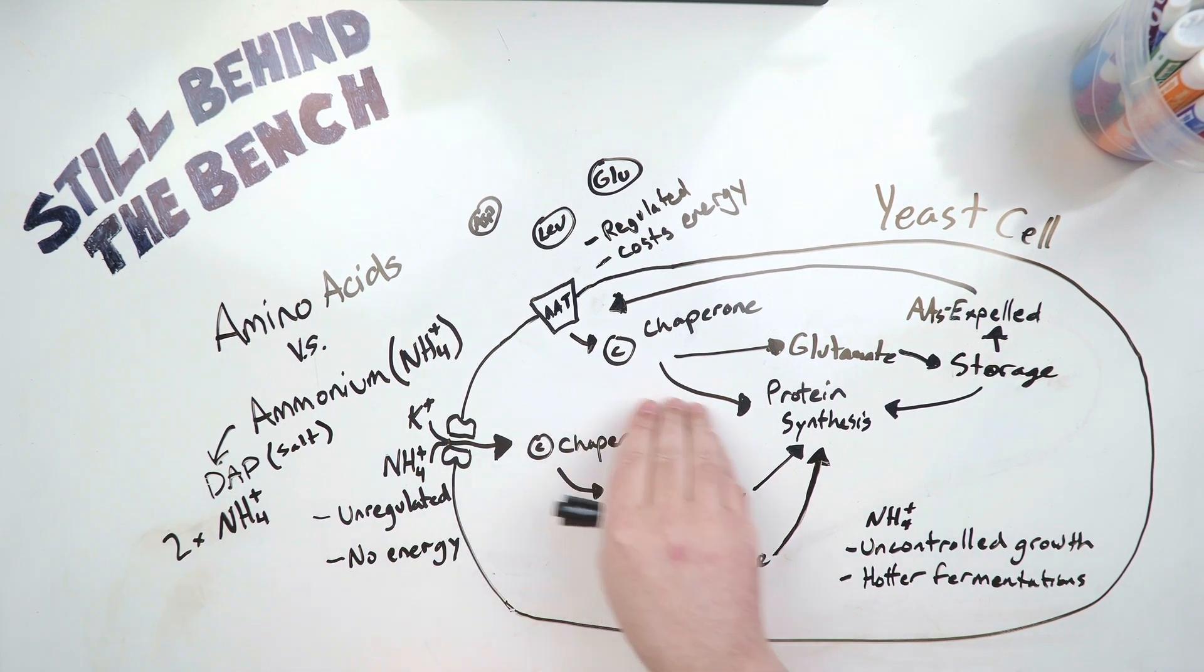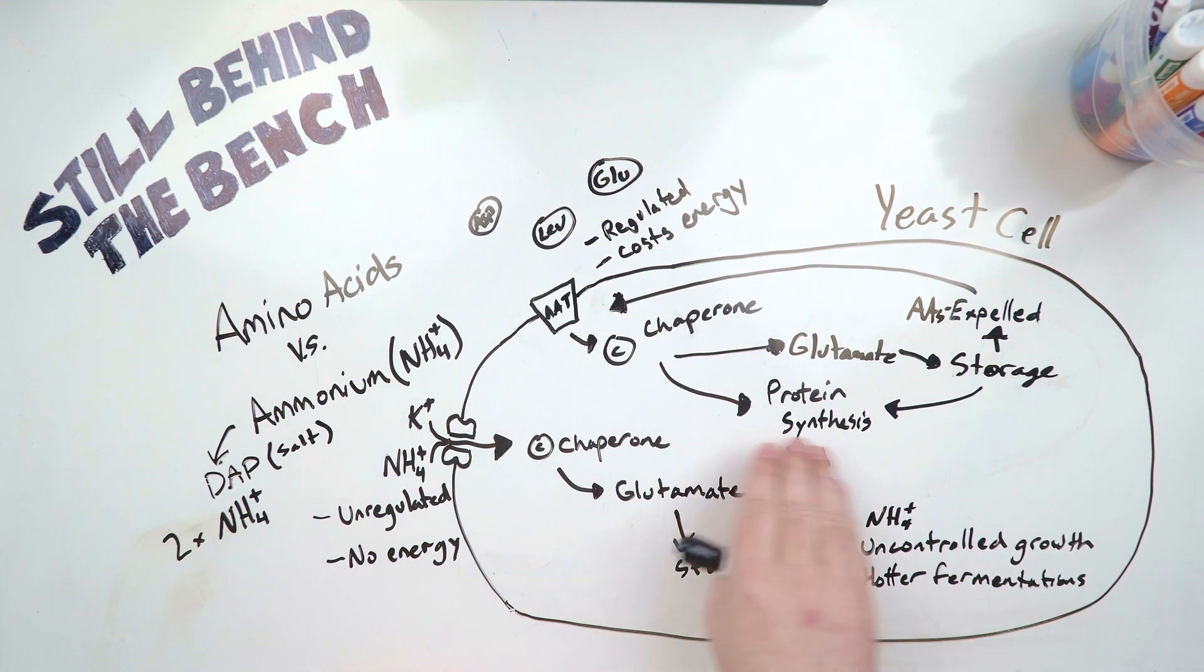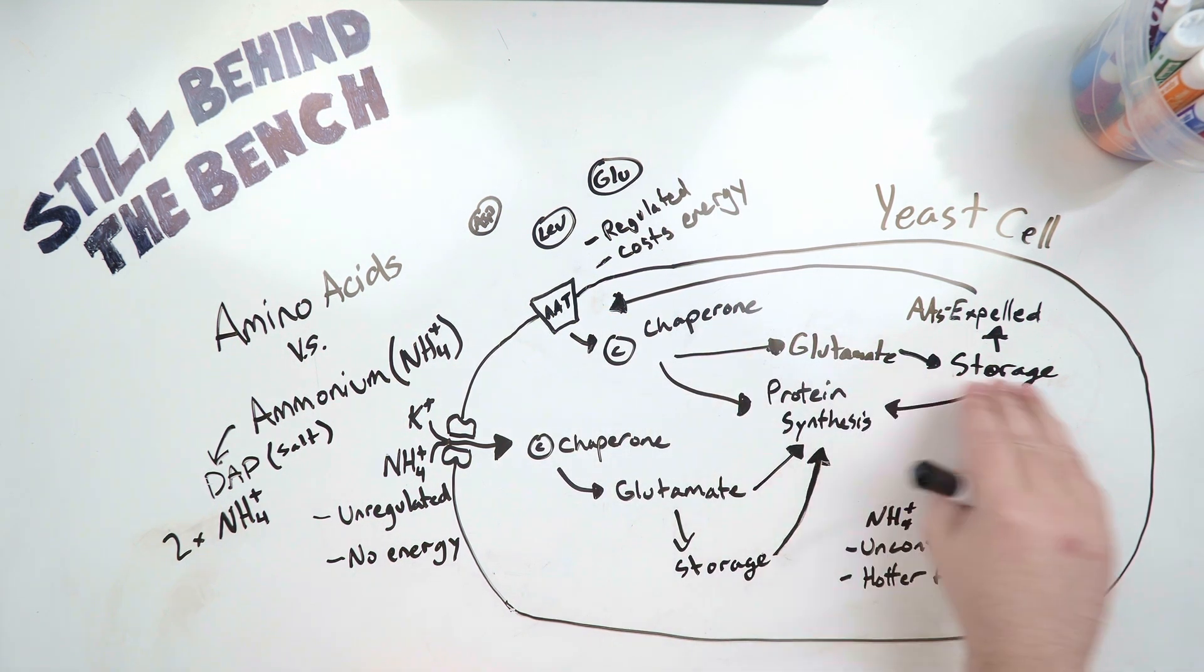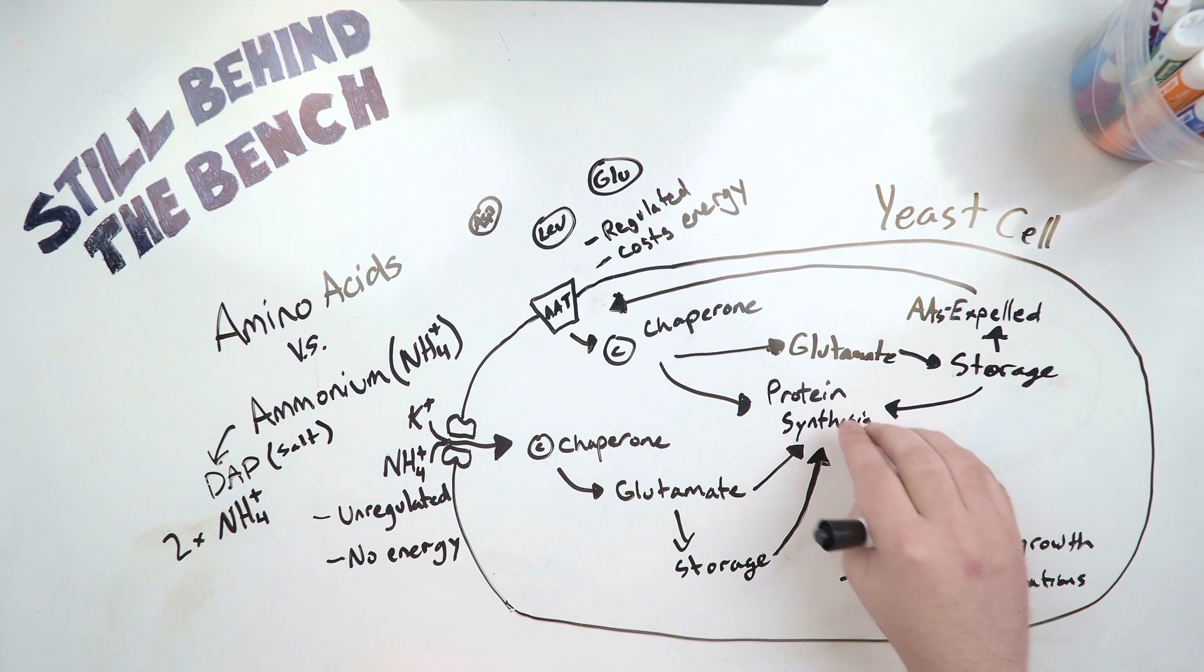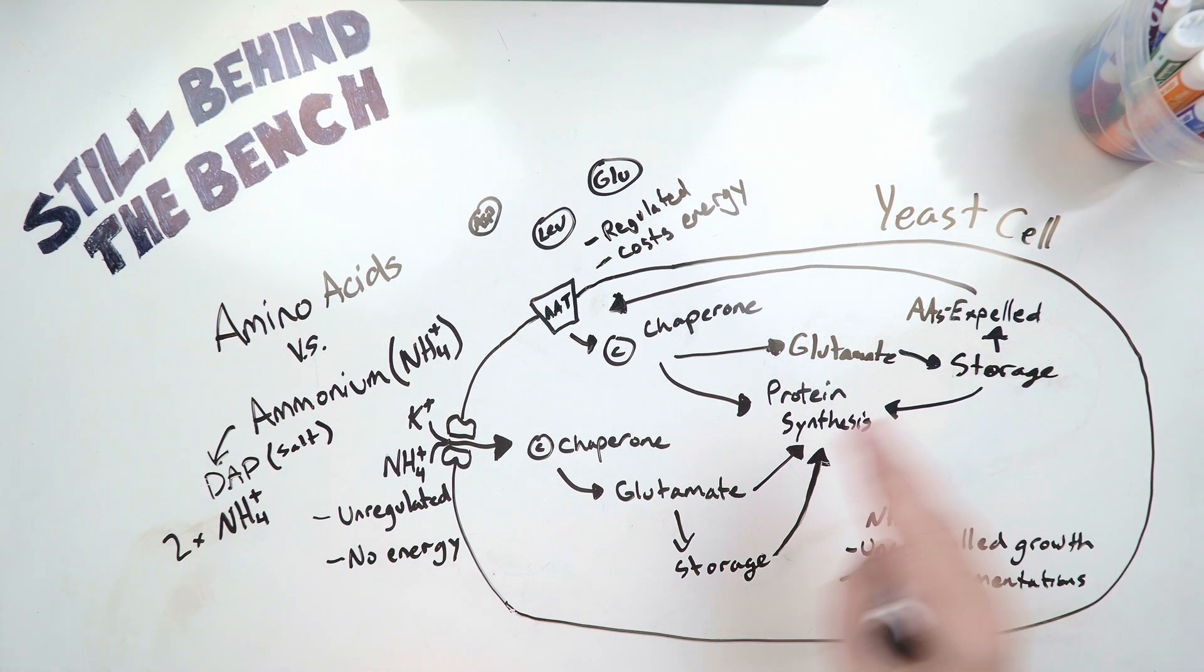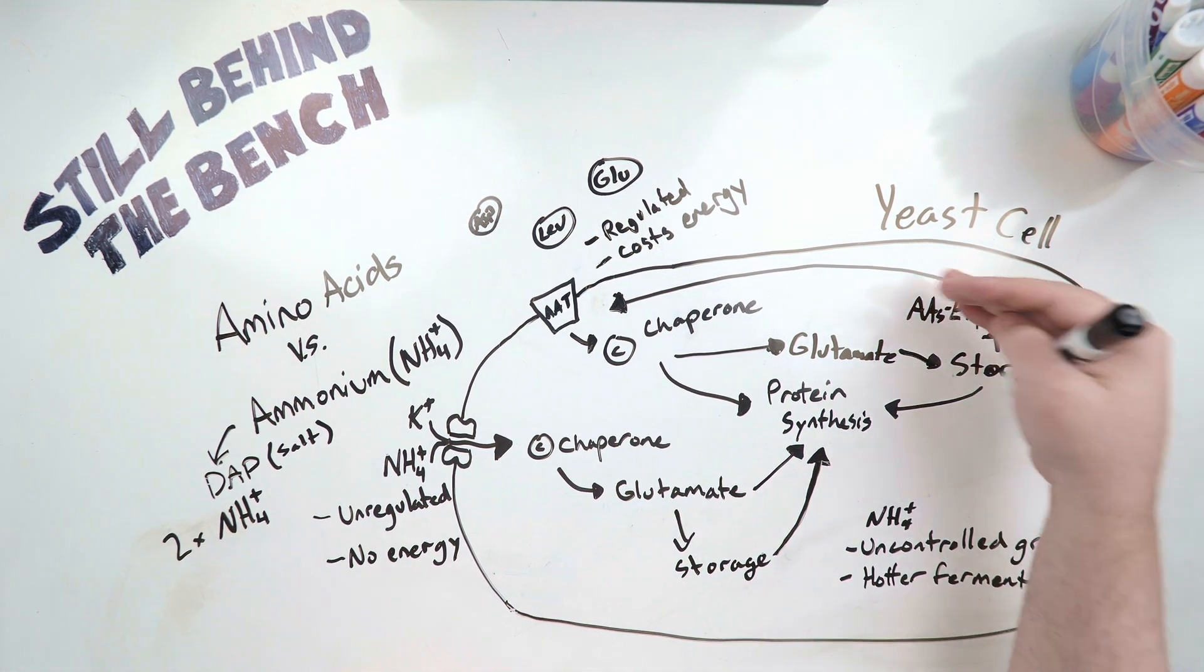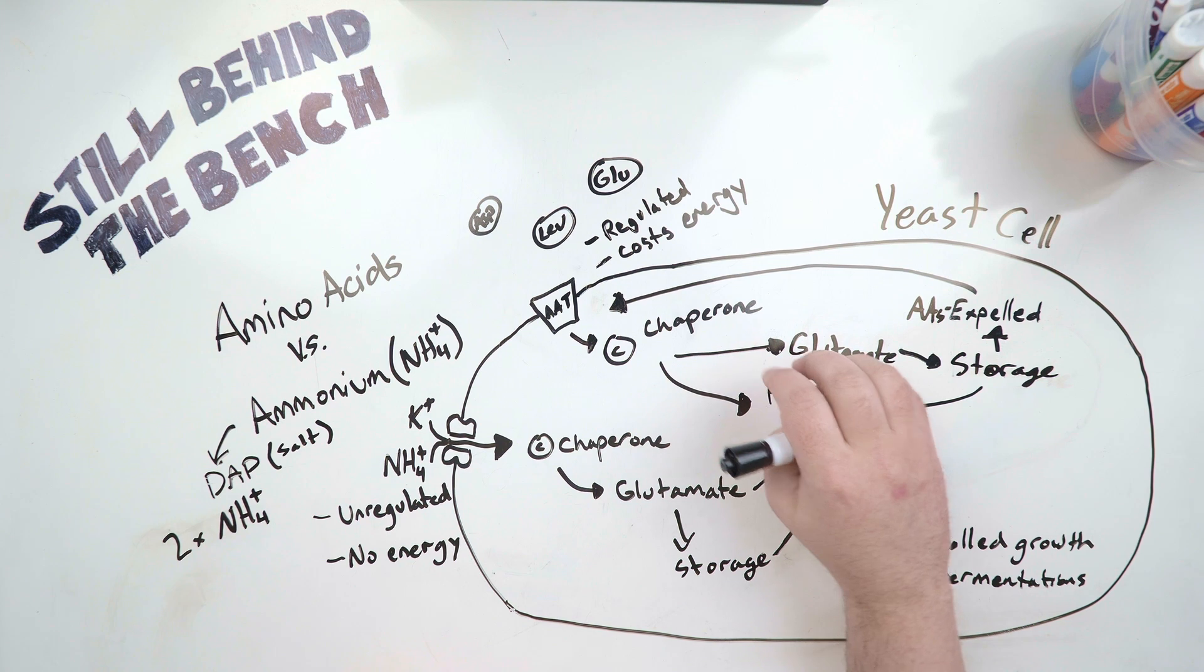And then it'll either go directly to protein synthesis, where it may be turned into another amino acid, or it gets turned into glutamate and it gets stored. That glutamate is needed, or another amino acid is needed. Storage will release it, and it will get pushed into protein synthesis. Or it may expel that amino acid if it turns out there's too much nitrogen within the cell.